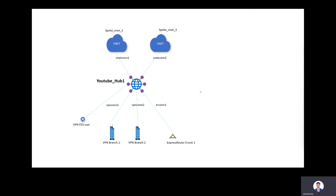Here I have a setup with just one hub — I'm calling it YouTube_hub_one to show this is for a demo. Connected to the hub I have several branches: a point-to-site user, two site-to-site VPN branches, and an ExpressRoute circuit. I have spoke VNet1 and spoke VNet2, and my goal is to isolate the VNets such that they cannot talk to each other, but they are able to talk to the branches, and the branches should be able to reach these spoke VNets.